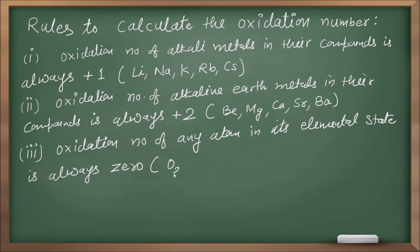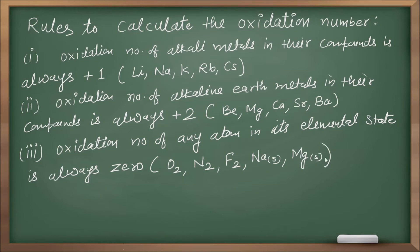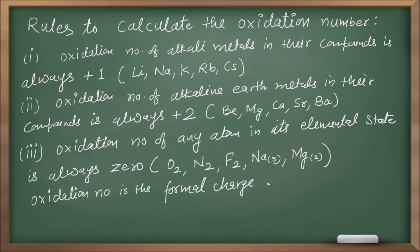Third rule: the oxidation number of any atom in its elemental state is always zero. For example, elemental state of oxygen is O2, nitrogen is N2, fluorine is F2. Sodium solid, magnesium solid — any element in its elemental state has oxidation number zero. Oxidation number is the formal charge on the atom in a compound.